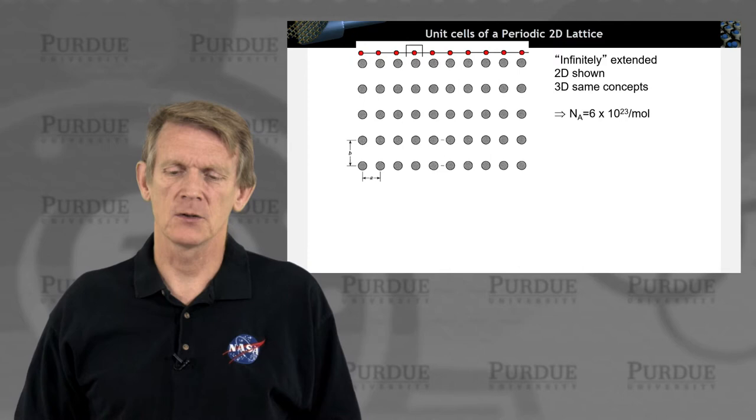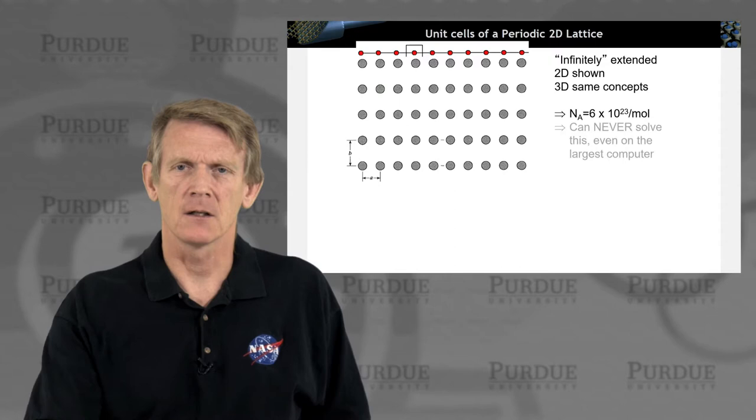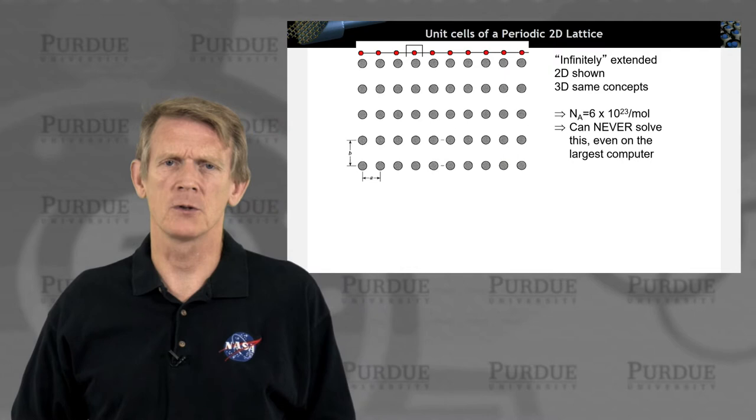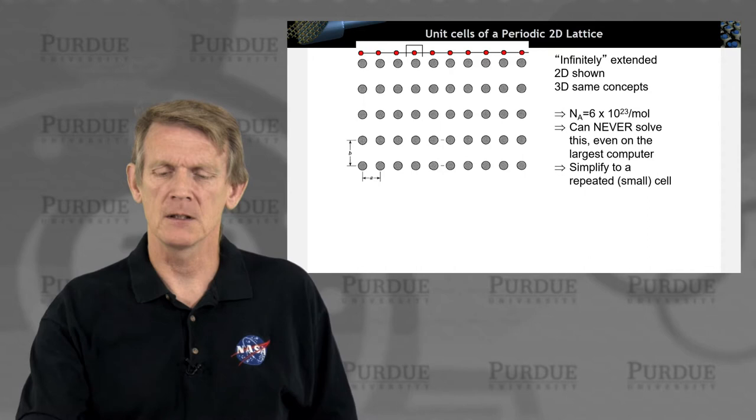A mole is 10 to the 23 atoms as an atomic weight in mole, and that's a number of atoms that we can't even comprehend as a human and can never solve it, even with the biggest supercomputer that we might have available.